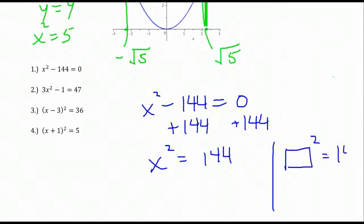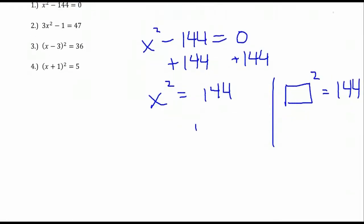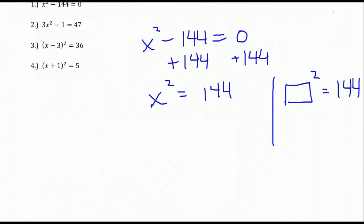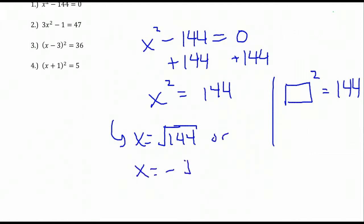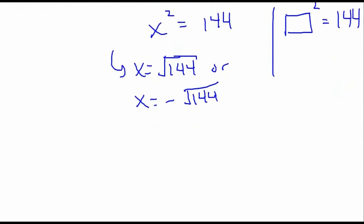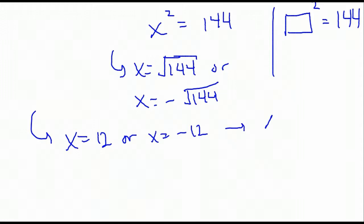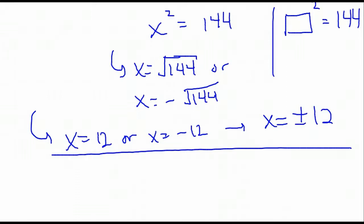We've got something squared equals a positive number. The only possibilities for that something can be the positive or the negative square root of the number on the right. So we're going to get that x is the square root of 144 or the negative square root of 144. We know that 144 is a perfect square — the square root of 144 is 12 — so we get two solutions: x equals positive 12 or x equals negative 12. We can write that in the more compact form: x equals plus or minus 12. That indicates two solutions — don't forget that.